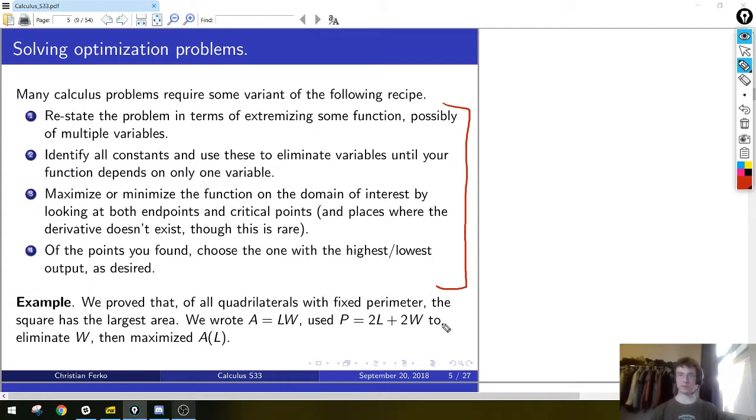So that's the example we did. Now I'm just pointing out the steps that we did, because these will generalize very nicely. When you're handed an optimization problem, or really many calculus problems generally, the steps which implement this recipe are first to restate the problem in terms of extremizing a function, for instance the area. Then if you have multiple variables, say length and width, you want to use a constant like the perimeter, if the perimeter is fixed, you use that to eliminate a variable so that your function is now a function of a single variable, one variable alone. Then you use the tools that we described on the previous slide, you maximize or minimize by looking at points in those three groups, say the endpoints and critical points and places where the derivative doesn't exist, and of those points you pick the one with the highest or lowest output, depending on what you're interested in. So that's just the broad strokes picture of what we've been doing all along. So enough abstraction, let's actually use this to do an interesting problem.